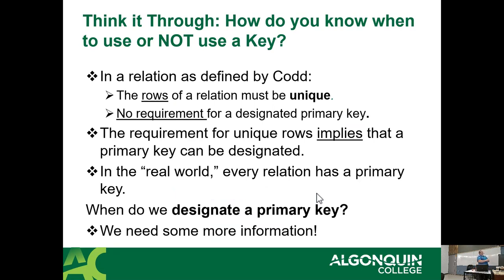A thought process on keys: there was a data scientist named Codd and another named Chen — the two granddaddies of data science. According to Codd, the rows of a relation must be unique; however, there is no requirement for a designated primary key. So each row must be unique, but technically you don't need a primary key. In the real world though, every database table should have a primary key.